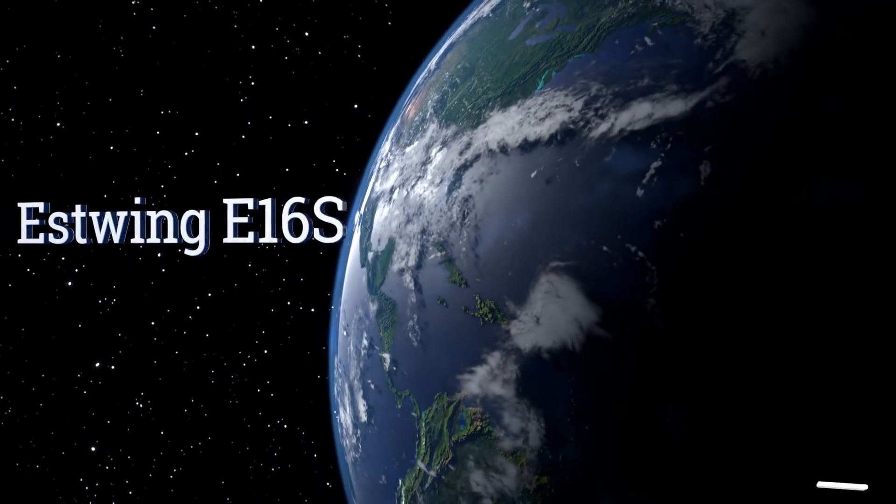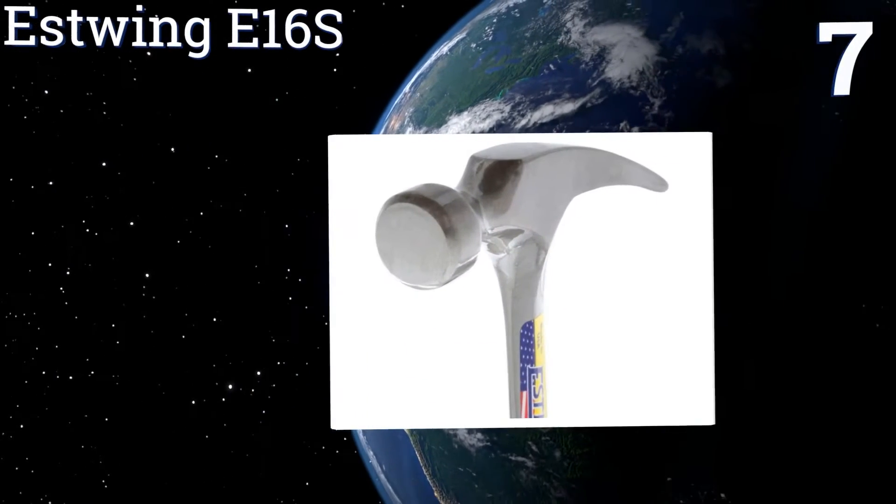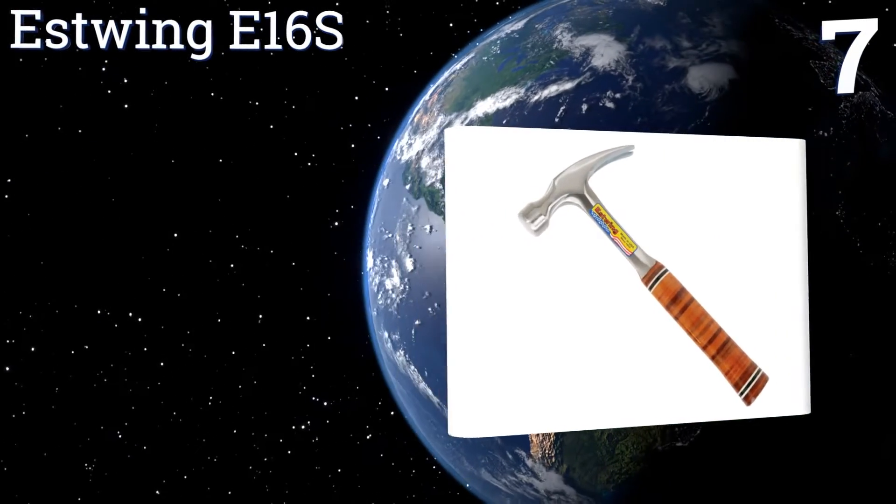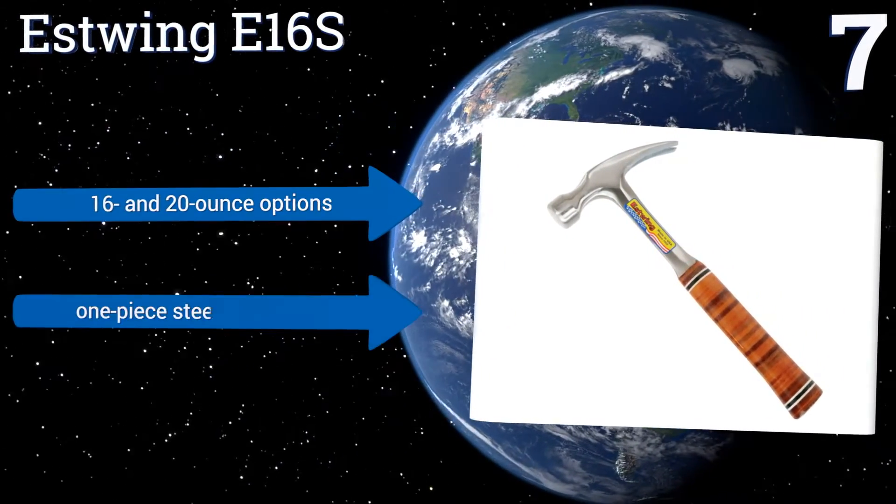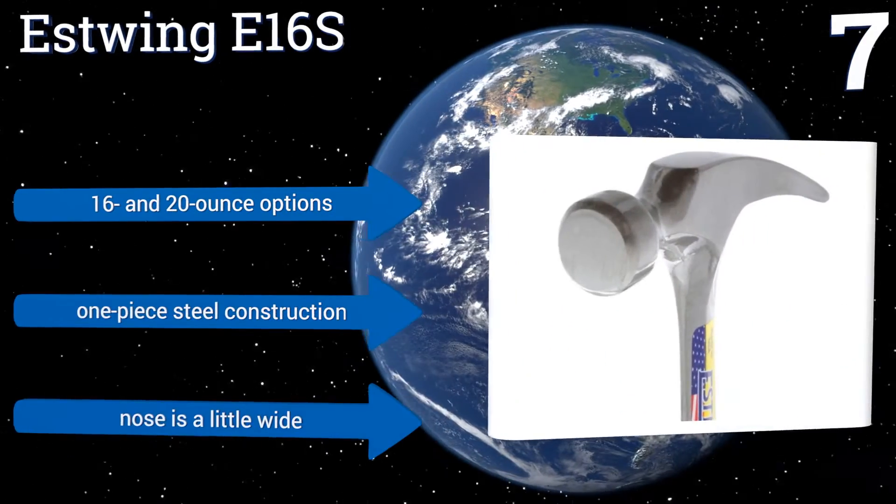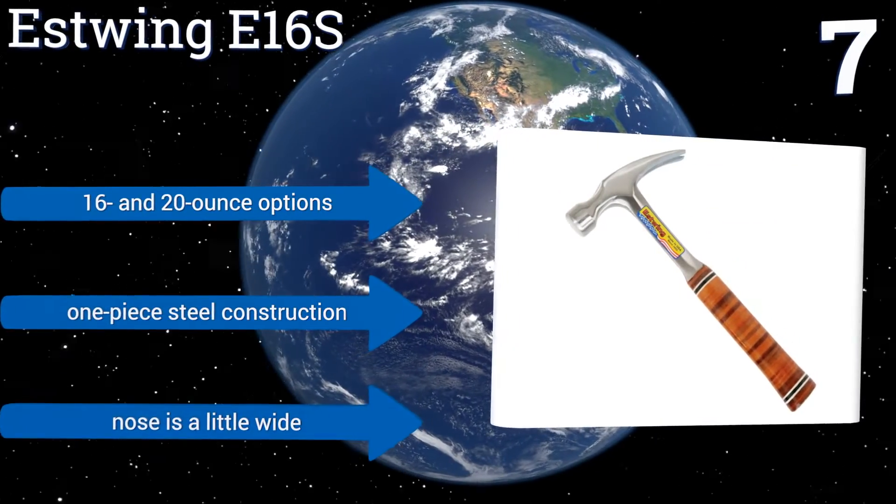At number seven, with a genuine leather grip and fully polished head and face, the Estwing E16S may be too beautiful to ever use. It is however fully equipped to tackle even the most work intensive projects, meeting all ASME quality and design specifications. It's available in 16 and 20 ounce options and is a one-piece steel construction, but the nose is a little wide.